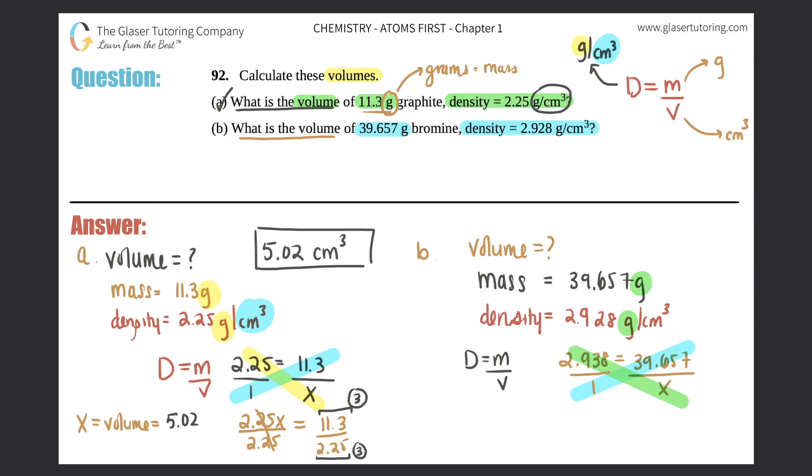So now we have 2.938 times x equals 39.657. Get x by itself, so you would have to divide by 2.938 on both sides. This number cancels out and we're left with x, which is the volume.